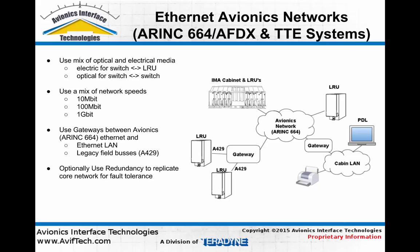Additionally, these implementations of avionics ethernet also allow for the use of 10, 100, and 1 gigabit per second ethernet, so in a given network all three of these link speeds could be found.